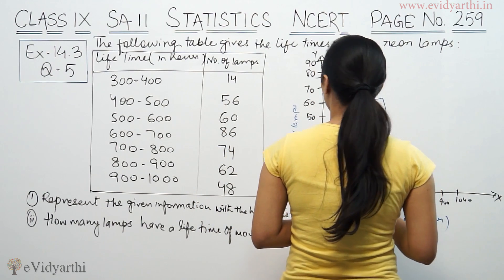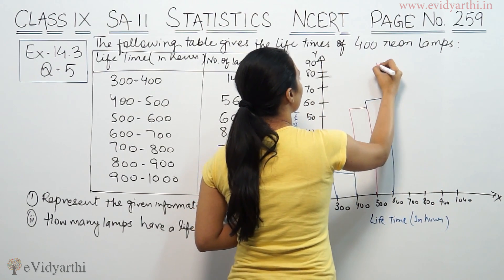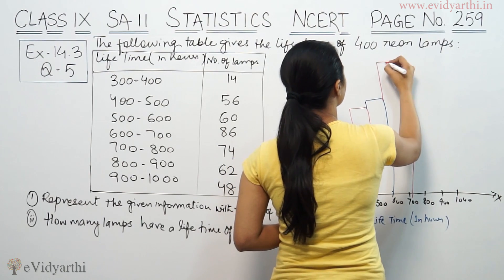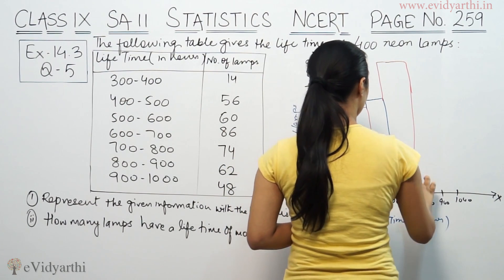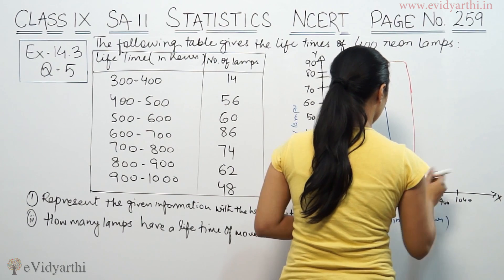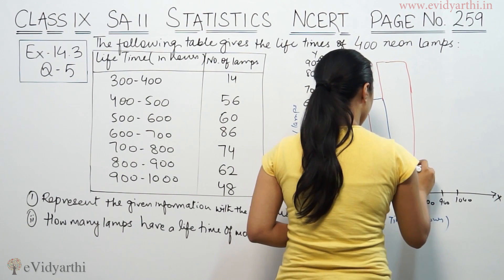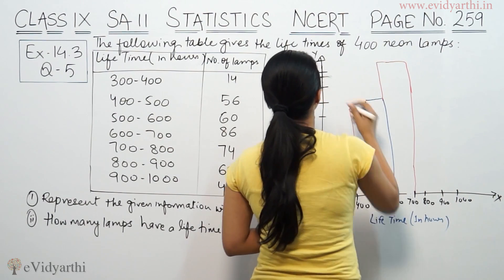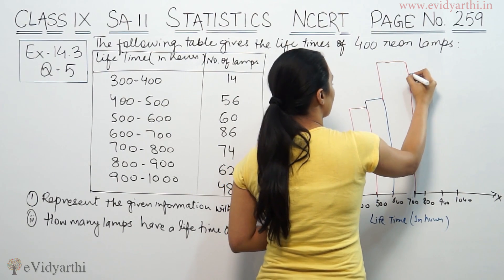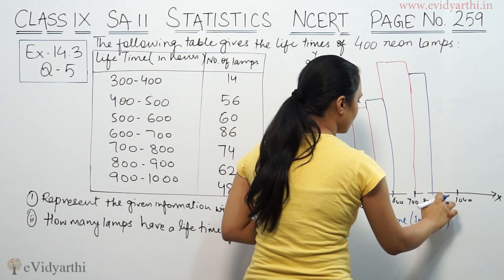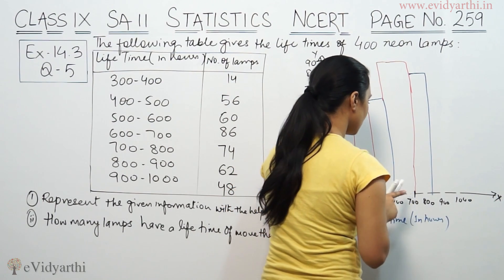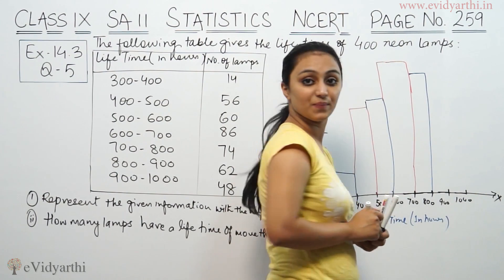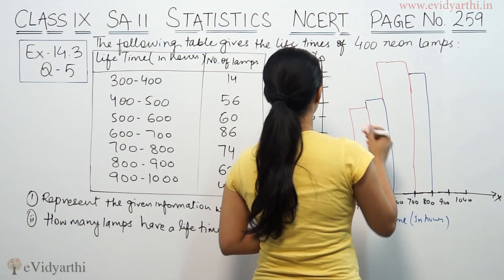Then 500 to 600 is 60, so the bar goes up to 60. Then 600 to 700 is 86. Then 700 to 800 is 74. This is 800, this is 900. So 800 to 900 is 62.